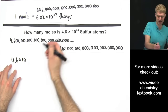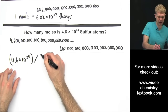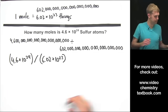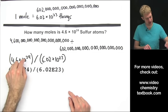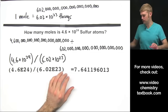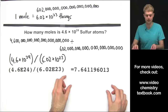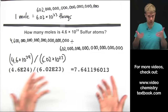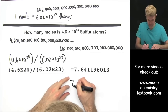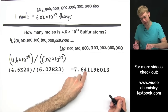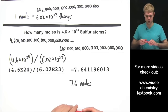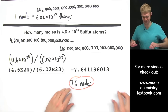We're going to do 4.6 times 10 to the 24th divided by 6.02 times 10 to the 23rd. Type it into the calculator replacing the powers of 10 with E notation: 4.6 E24 divided by 6.02 E23. Hit return and we get a number. It's not in scientific notation, so we don't have to worry about that. We round with significant figures — two sig figs in 4.6, three in 6.02, so round to two. The next digit is a 4, so we keep it the same. The answer is 7.6 moles of sulfur atoms.